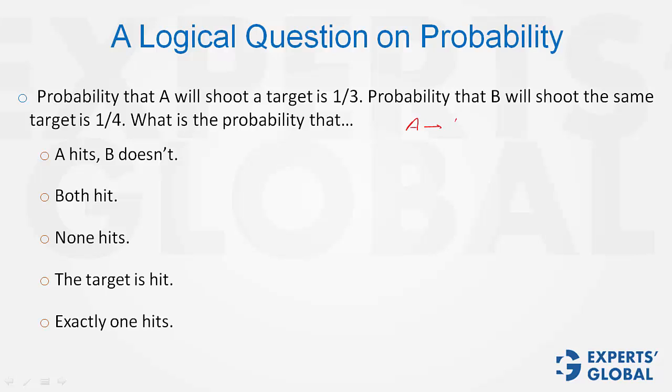Probability of A hitting is 1 by 3. Probability of B hitting is 1 by 4.